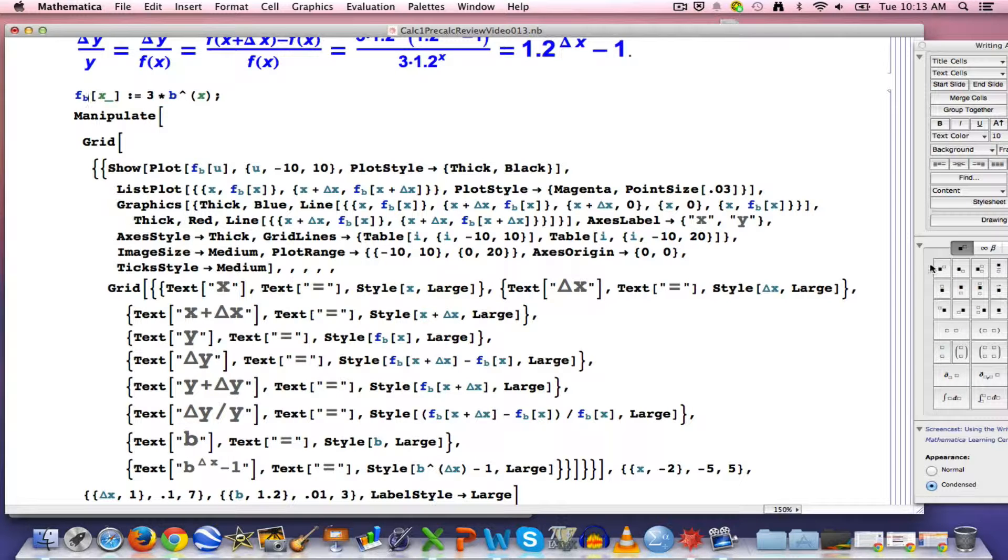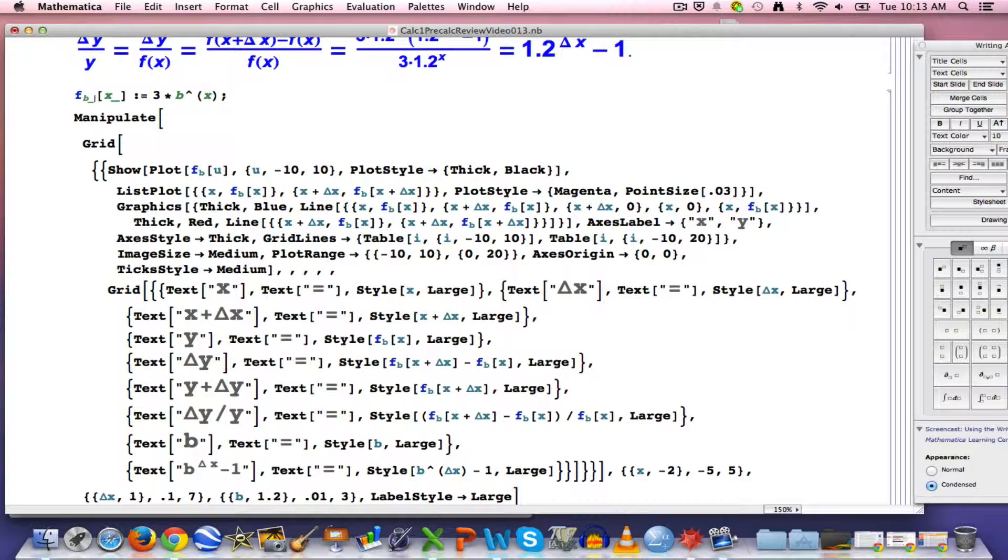When I'm defining the function, just like I need to put an underscore after the X, I also need to put an underscore after this B, though not thereafter. So that'll do this so that we won't get any errors.